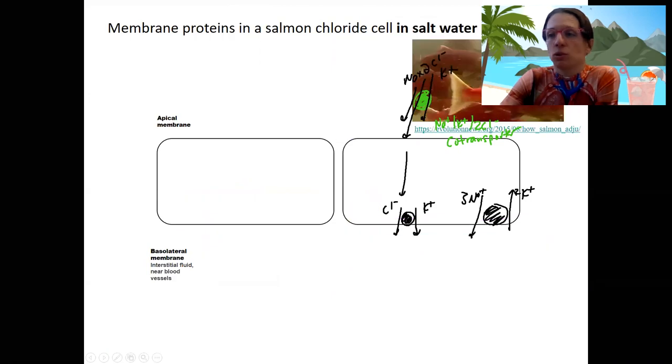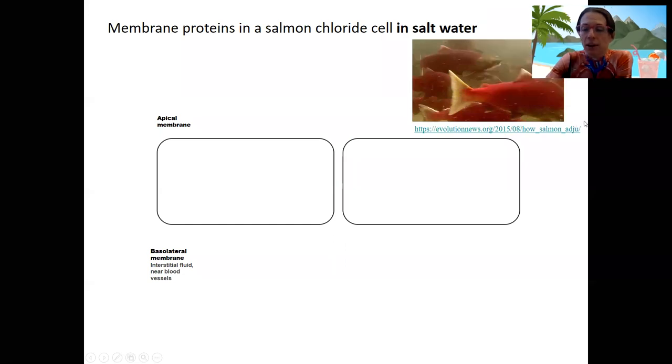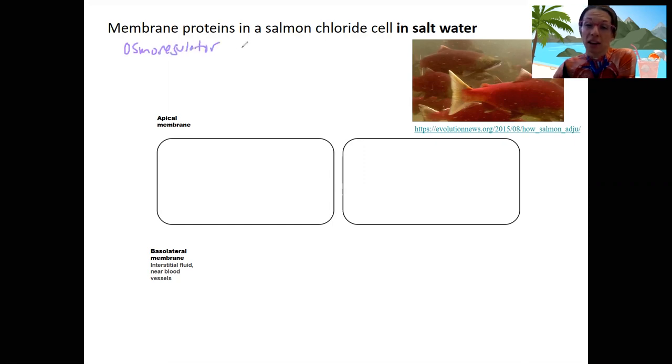Nothing like a little comparative anatomy to help us understand things. This is zoomed in to a salmon chloride cell. What's cool about biology is that different organisms can use some of the same mechanisms to do similar things. Salmon can actually adjust to live in salt water or fresh water. The mechanisms by which the salmon excrete electrolytes and water is very similar to how our kidneys do it. This is a salt water example here. The salmon is an osmoregulator, just like we are, but it's a marine osmoregulator. It has to remove salt because it lives in salt water.